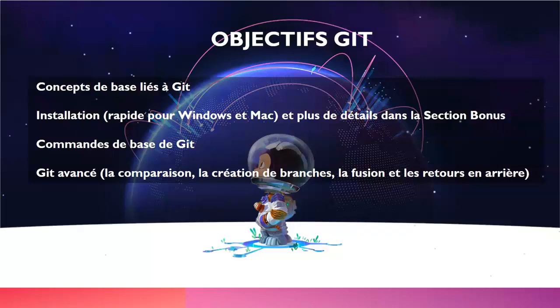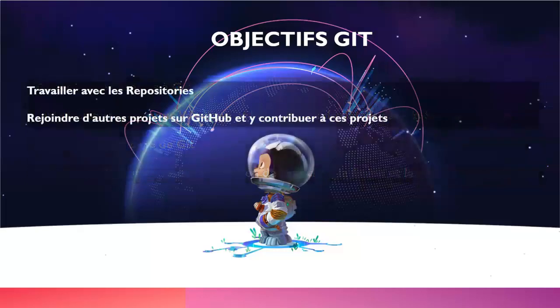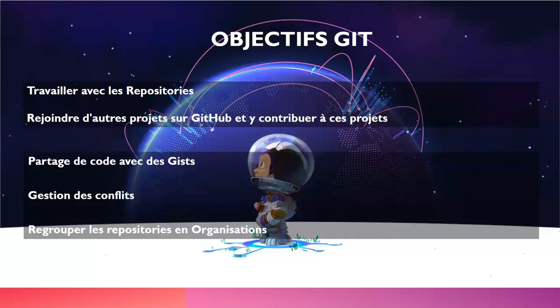After learning the principles of Git, we will cover more advanced topics such as comparison, branches and merge. We will deal with many other Git features, and the majority of them are for backup. We will work with repositories and how to join projects on GitHub and contribute to these projects. After covering the main aspects of GitHub, we will see features such as code sharing with Git, conflicts management, and the grouping of repositories by organization.